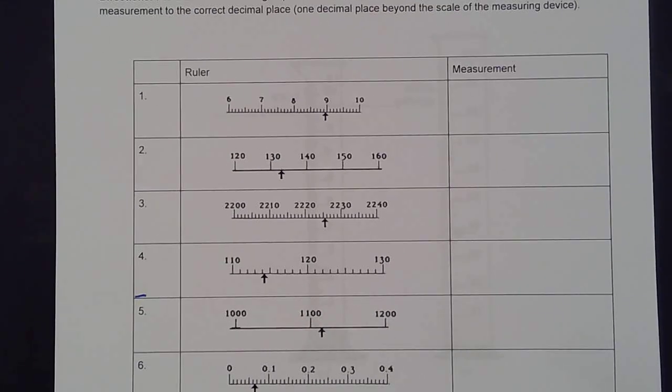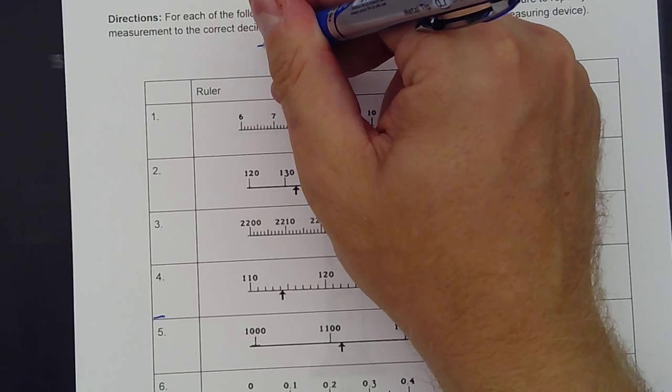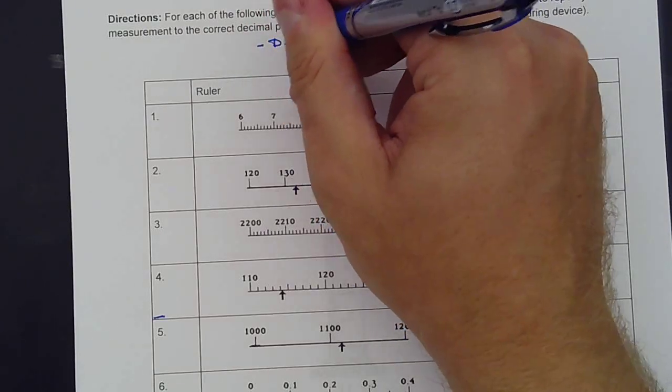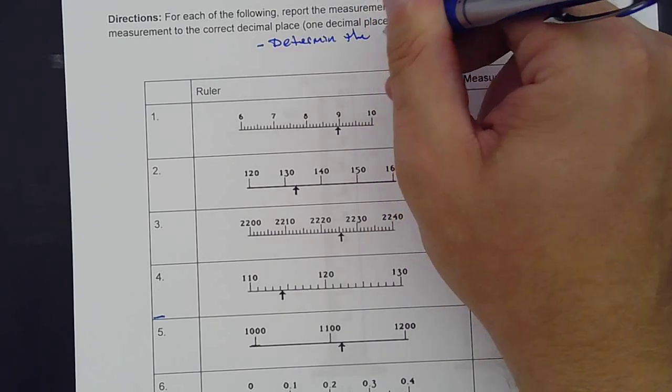Now we're talking about measurements, and we have two rules. Our first rule is to determine the scale.